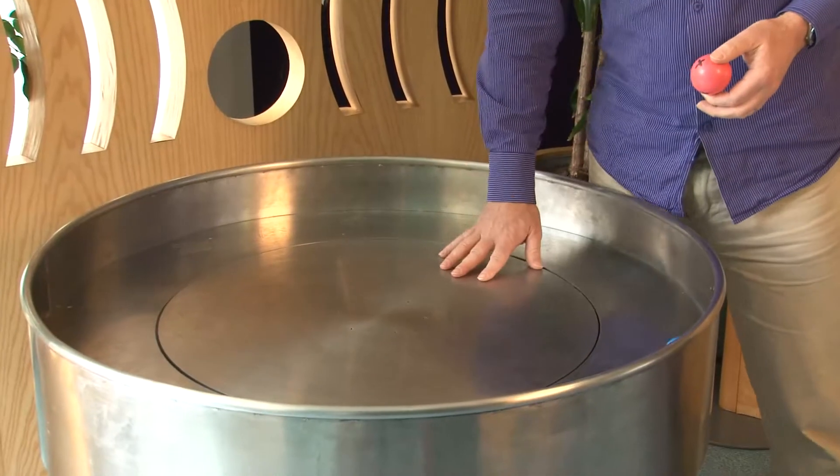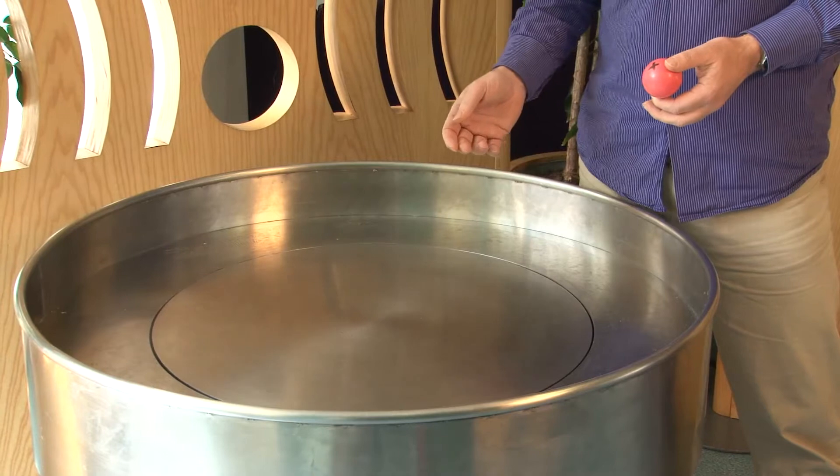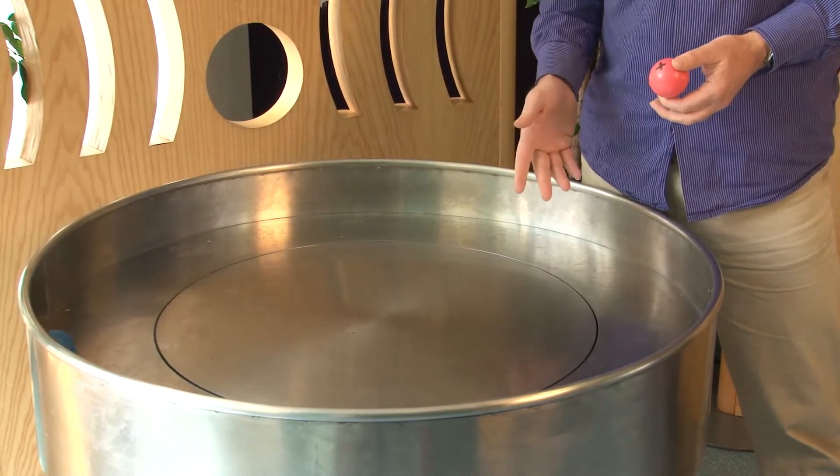So I've got some example charged particles here and we're going to look at what they do in electric fields and magnetic fields. So we have this great little piece of apparatus which can rotate round and round and give us the real feeling of magnetic and electric fields.